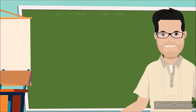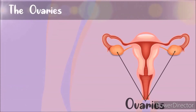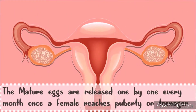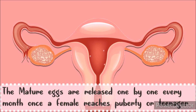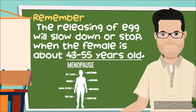The female sex hormones are called estrogen and progesterone. Female humans have two ovaries. Did you know that when a female is born, about 70,000 potential egg cells are already present in the ovaries? However, only 500 of these eggs will mature. The mature eggs are released one by one every month once the female reaches puberty or the teenage years. The releasing of eggs will slow down or stop when the female is about 43 to 55 years old.